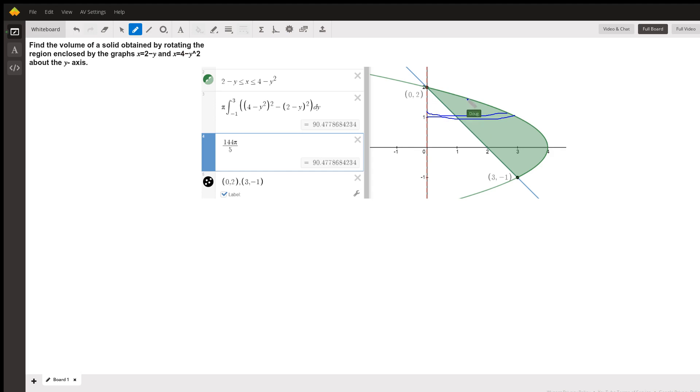If we use the shell method, our typical shell would change when we reach this point over here, and the calculation and setting up the integral would be much more complicated. So we're going to use the formula π times the integral, definite integral, from a to b of outer radius squared minus inner radius squared, in our case dy.